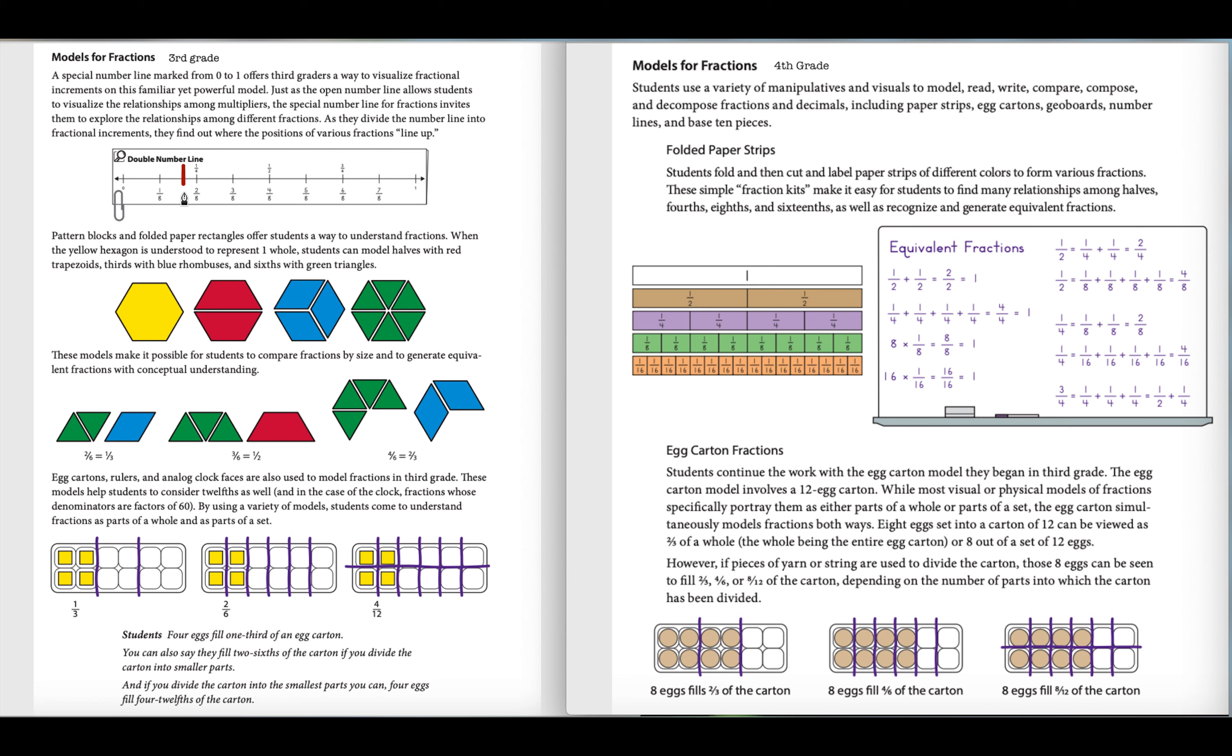You can see one-fourth and two-eighths line up together, and that is really built on in fourth grade when you have that paper strip that is equivalent to a whole, and then we look at how one-fourth and again two-eighths are represented.